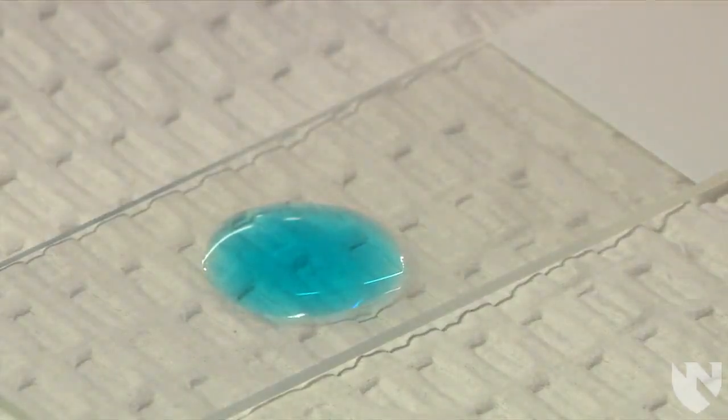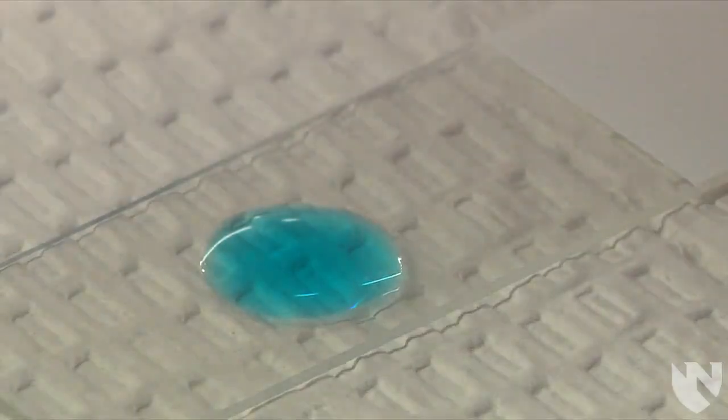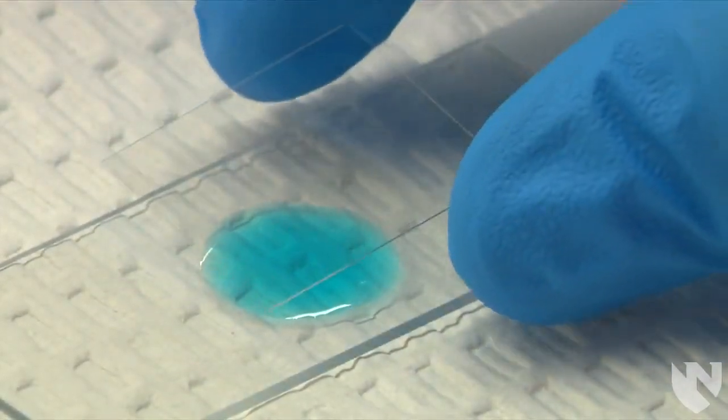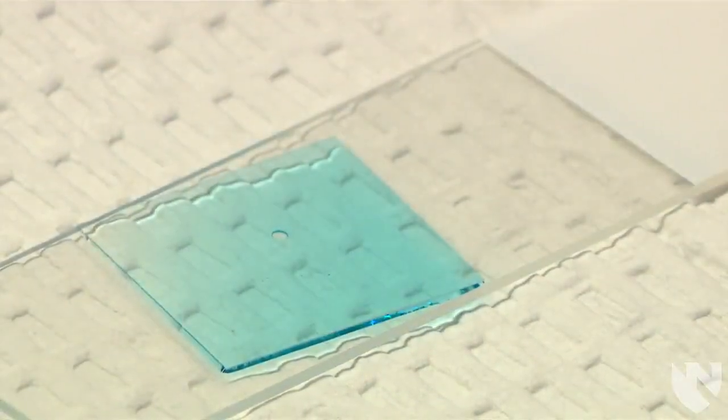If you dispense too much sample on the slide when you place the cover slip over the sample, it will flow out and cause the elements in the sample to float under the cover slip. So discard this slide into a sharps container and make a new slide.